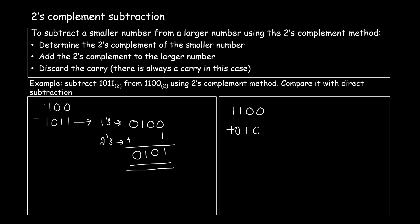Now let's perform addition using the rules of binary addition: 1 plus 0 is 1, 0 plus 0 is 0, 1 plus 1 is 0 with a carry, and 1 plus 1 plus 0 is 0 with a carry. So you had 4 digits in each number but are getting a 5th digit.